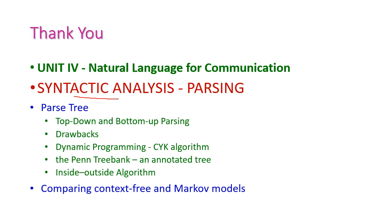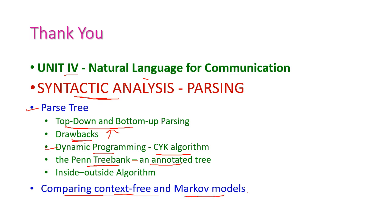In summary, we have seen syntactic analysis from the fourth unit on natural language processing: what is parsing, top-down and bottom-up parsing with their drawbacks, dynamic programming covering the CYK algorithm and the inside-outside algorithm, the Penn Treebank with annotated tree structures, and the comparison of context-free and Markov models. In the next class we will see another important topic from the fourth unit. For more information please go through the textbook.